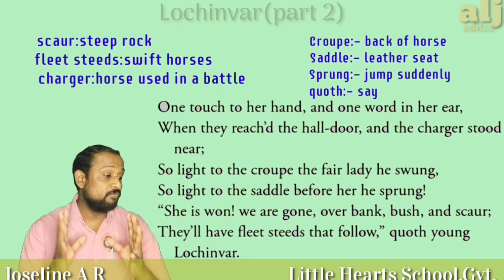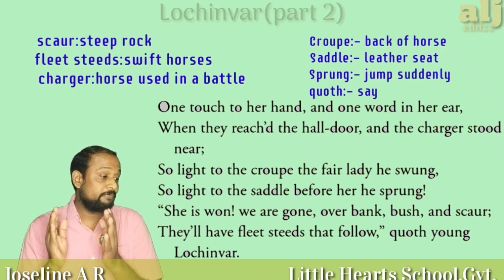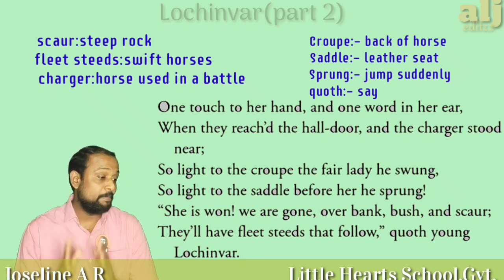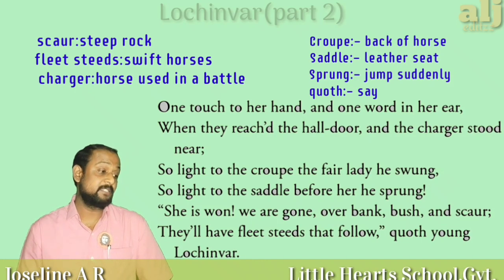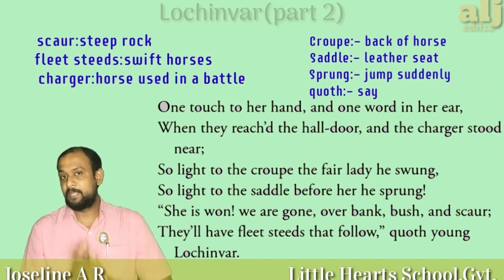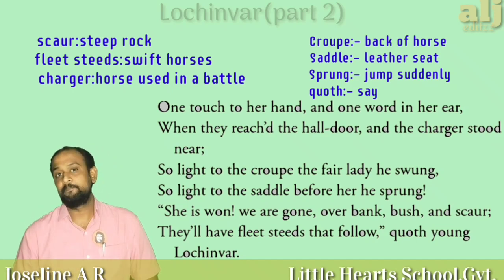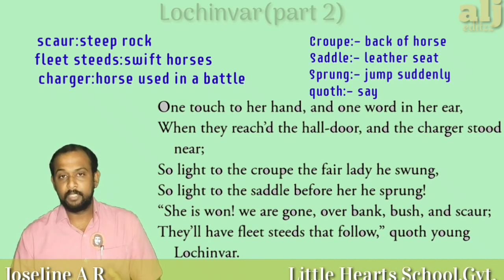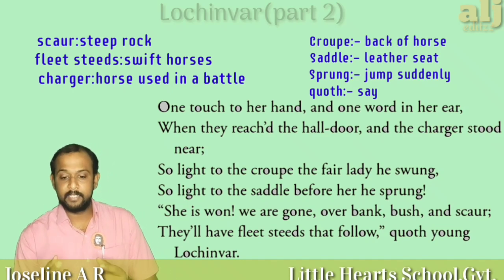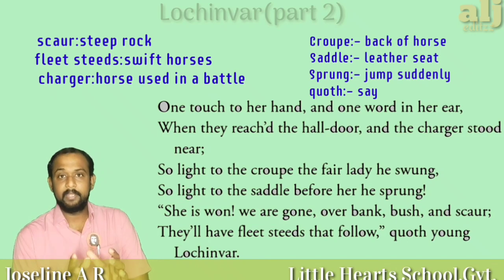One touch to her hand and one word in her ear, when they reached the hall door and the charger stood near. Lochinvar had come with pre-intention — his intention was to elope and save Ellen and leave with her. While dancing, he brought her towards the hall door — the entrance. As soon as they reached the entrance, he touched her hand and gave a signal, told something in her ear, making very clear that she should be ready for escape. Before that, he had made his charger — his horse — stand ready at the door.